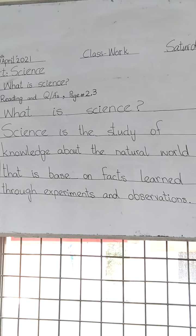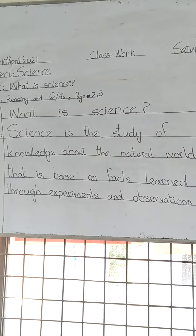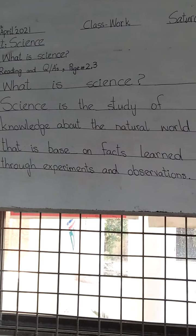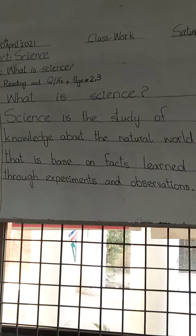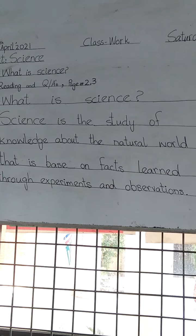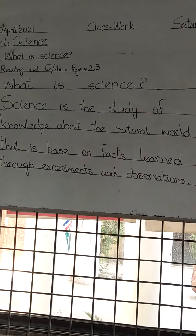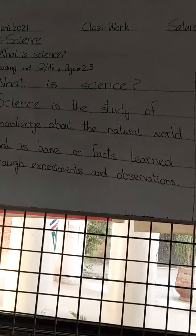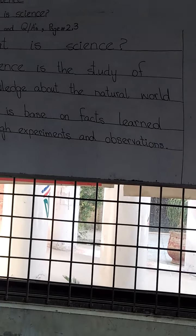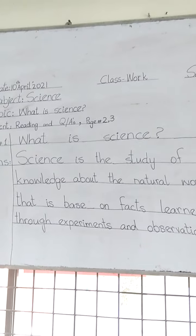We have to understand that science is a study in which knowledge is gained about the natural world — our world — and that knowledge is based on facts. We learn through different experiments. Observations means we have to understand something — for example, if we think there is a disease in an area, what is causing it? That is our observation. Then we think about it and do an experiment. That is today's question — thank you.